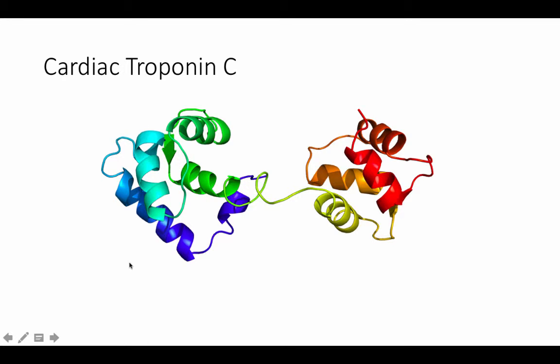Troponin C contains an N-lobe and a C-lobe. Both domains have two EF-HANDs each, seen here.